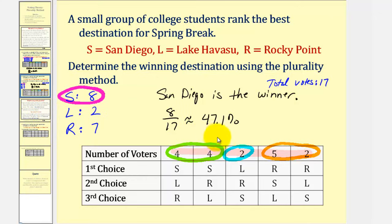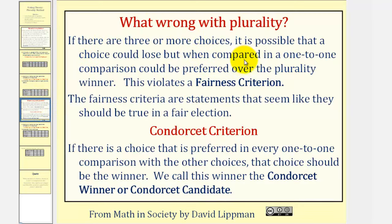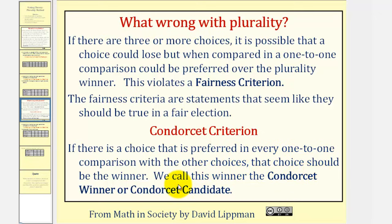This leads us to a discussion about what can be wrong with the plurality voting method. If there are three or more choices, it is possible that a choice could lose, but when compared in a one-to-one comparison, could be preferred over the plurality winner. This violates what's called a fairness criterion — statements that seem like they should be true in a fair election. The first fairness criterion we'll consider is called the Condorcet criterion: if there is a choice that is preferred in every one-to-one comparison with the other choices, that choice should be the winner, and we call this the Condorcet winner or Condorcet candidate.